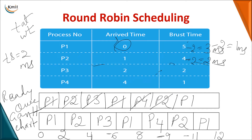Based on these completion times, we can calculate turnaround time, waiting time, and response time along with their averages. The first response of P1 is at 0, P2 at 2, P3 at 4. Even though P1 repeats a second time, its first response is still 0. These first response times are used to calculate the response time.